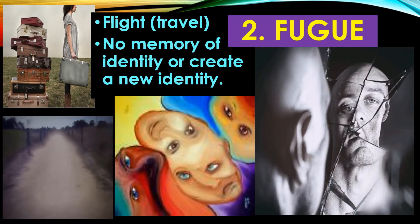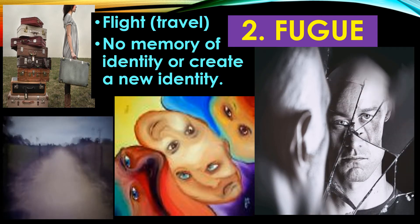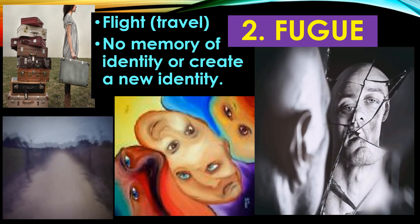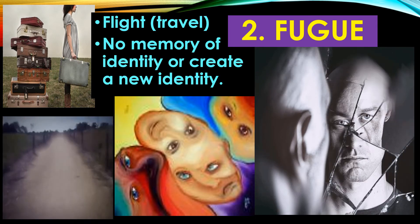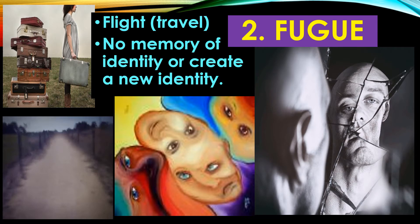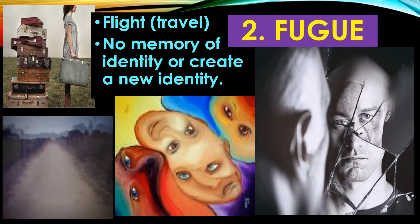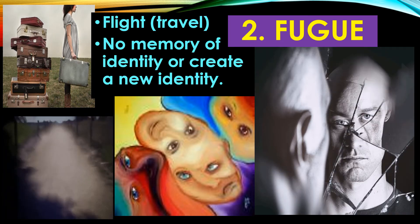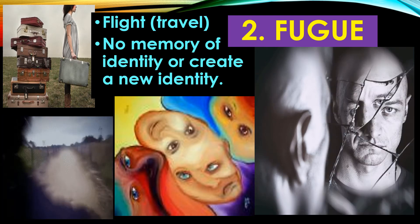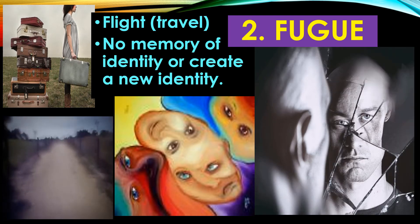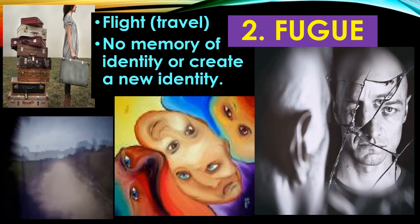Another type of dissociative disorder is called fugue. Fugue is a word also used in music; it literally means flight. In this case, a person has a trauma and they literally run away and mentally escape. Travel is always part of fugue — the person travels to a new location where their memory is lost or they create a new identity. This is called dissociative fugue.